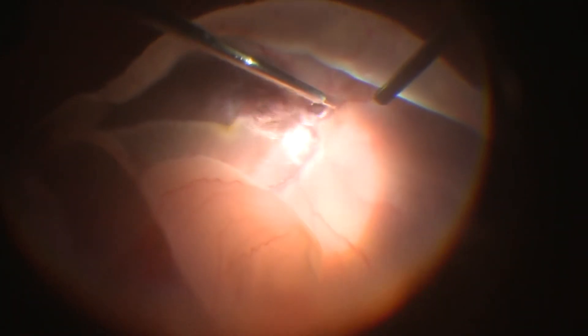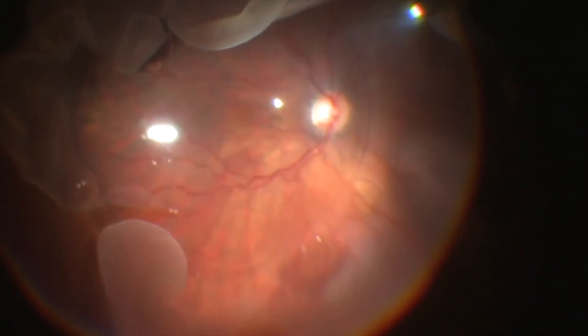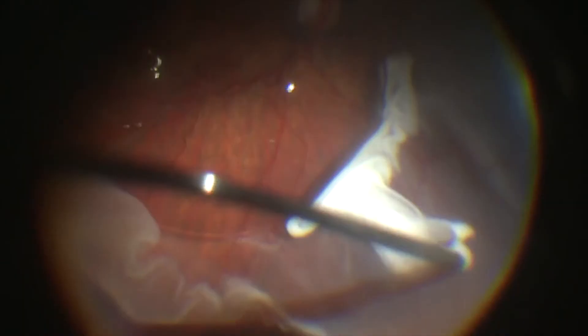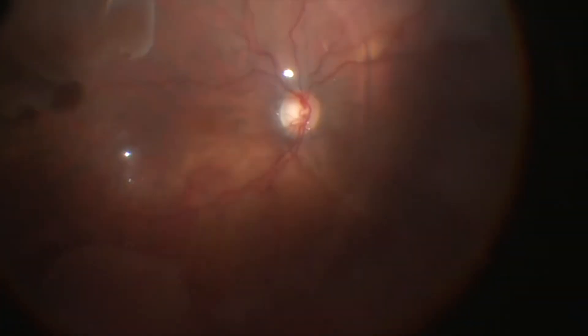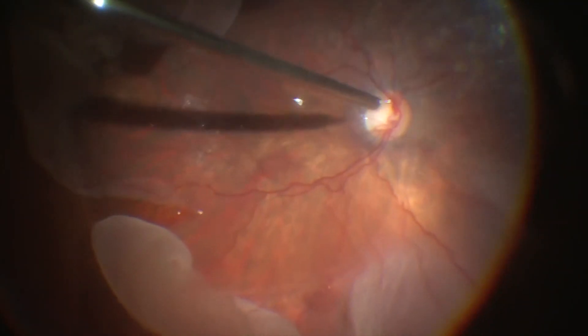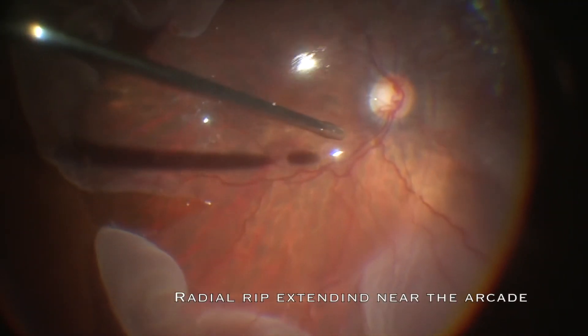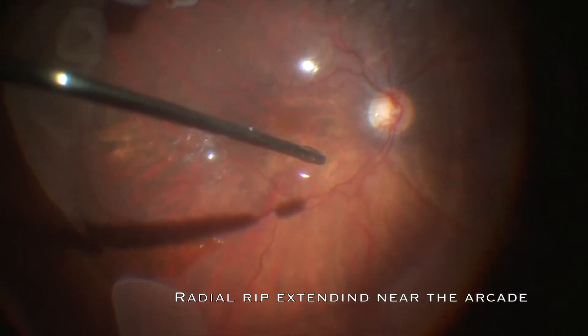Flattening of the retina with PFCL has to be done very carefully in these cases as the radial tears are common sites where the heavy liquid can go into the subretinal space. The folded edges of the radial rip are ironed out with blunt instrument under the PFCL.